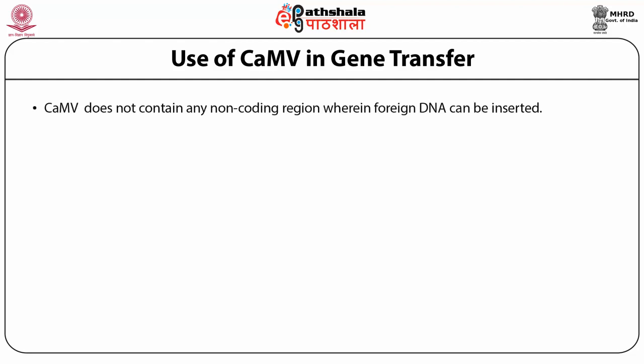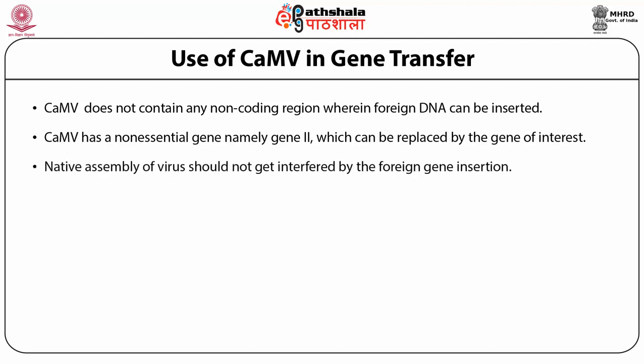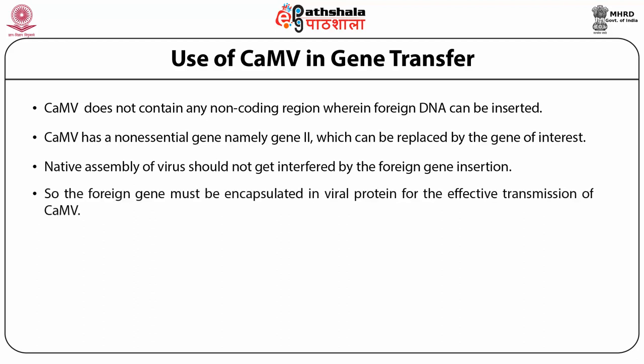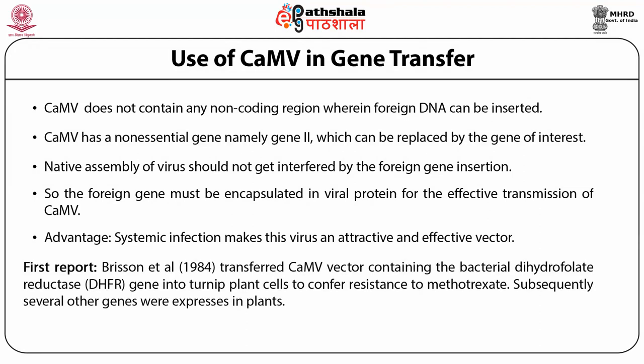Use of CaMV in gene transfer: CaMV does not contain any non-coding region into which foreign DNA can be inserted. Cauliflower mosaic virus has a non-essential gene named gene 2, which can be replaced by the gene of interest. The native assembly of the virus should not be interfered with by the foreign gene insertion; the foreign gene must be encapsulated in viral protein for effective transmission. The advantage of systemic infection makes this virus an attractive and effective vector. The first report using this viral vector was by Bryson et al., 1984, who transferred a CaMV vector containing a bacterial DHFR gene into turnip plants to confirm resistance to methotrexate.